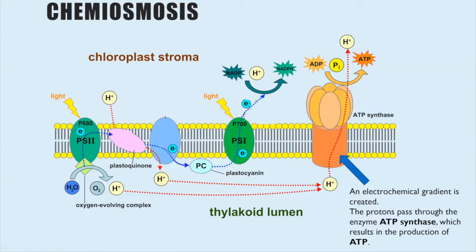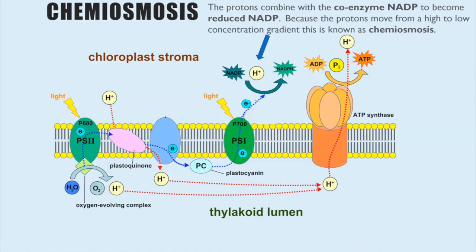We describe this as an electrochemical gradient because it is an ion and has a charge. Because we've now got lots and lots of protons on one side of the membrane, facilitated diffusion occurs, but the only protein that protons or hydrogen ions can diffuse through is ATP synthase. This is an enzyme which catalyzes the reaction of ADP and an inorganic phosphate joining together to make ATP. As protons diffuse through ATP synthase, it causes a change in shape of the protein and it is that change in shape which provides the energy to catalyze this reaction — that's how ATP is produced.